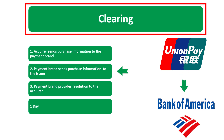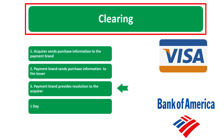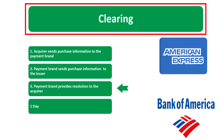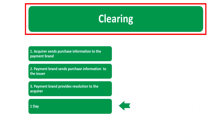The issuer is the bank or the entity that gave the card to that person — in this case, you. Step number three: the payment brand — Visa, Mastercard, American Express, JCB, Discover, UnionPay — provides resolution to the acquirer, the bank of the merchant. This process may take about one day in the United States.